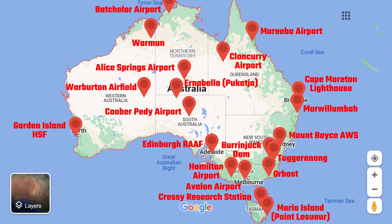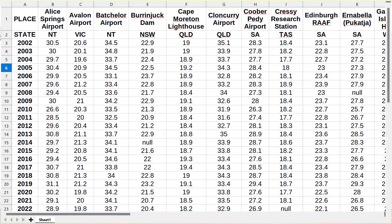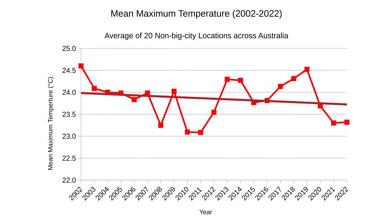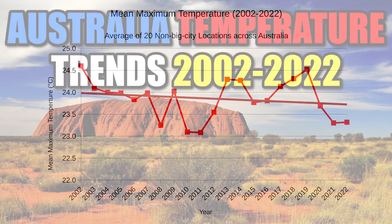So what does all this data from across Australia tell us? I put all the data from all 20 locations into a single spreadsheet and calculated the average maximum temperature across all locations for every year since 2002. The result shows that mean maximum temperatures have been trending downwards slightly across Australia, at least for the 20 locations I included — noting again that I purposely did not include big city data. I'm not suggesting anything, make of it what you will. I intend on making a video in the near future that just includes big city data to see what's happening there. Thanks for watching.